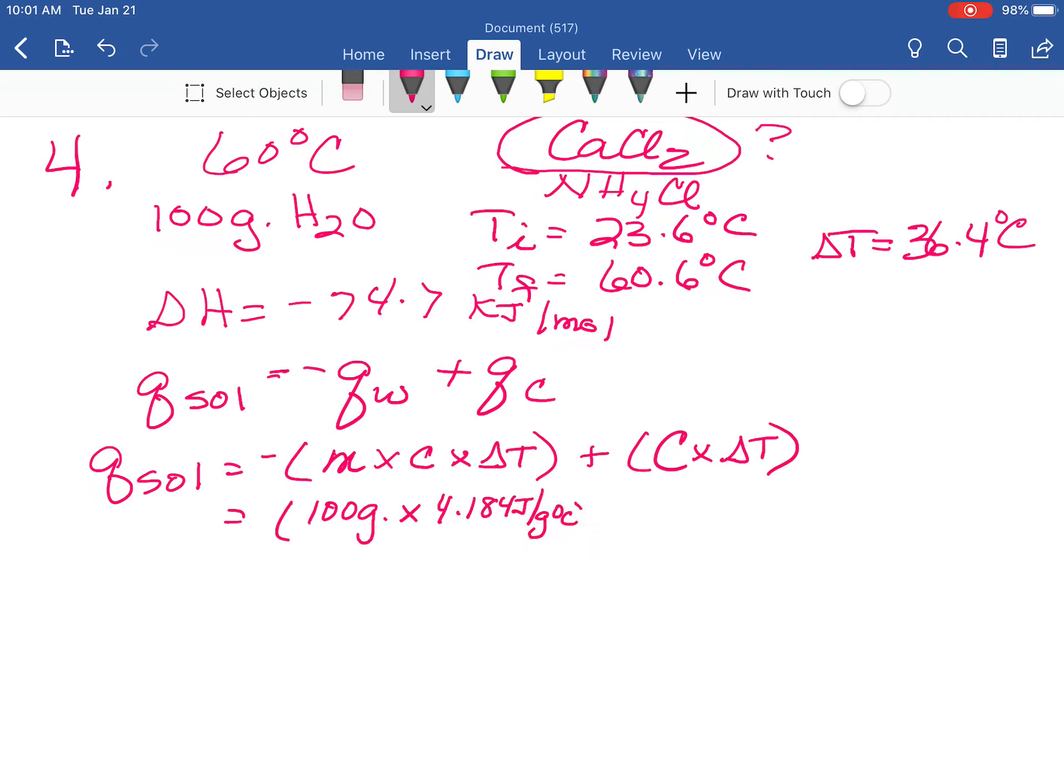So we can plug values in for this. We have a mass of water which is 100 grams. We know the heat capacity of water as 4.184 joules per gram degrees Celsius, and we have a delta T of 36.4 degrees Celsius.